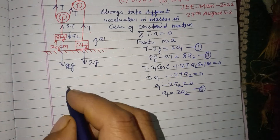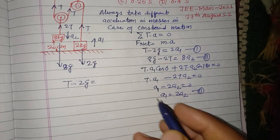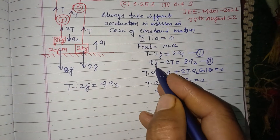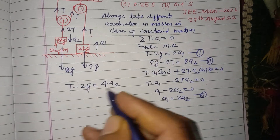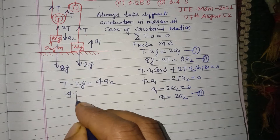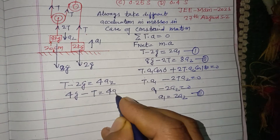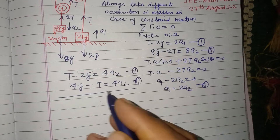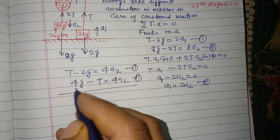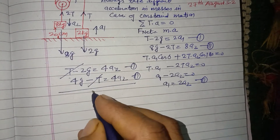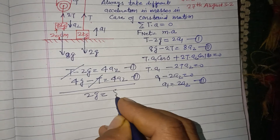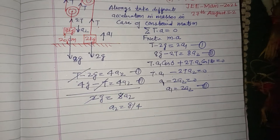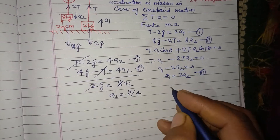Substituting a1 = 2a2 into the first equation: T minus 2g = 4a2. The second equation is 8g minus 2T = 8a2, which simplifies to 4g minus T = 4a2. Adding these two equations, T cancels: 4g minus 2g = 8a2, giving 2g = 8a2, so a2 = g/4.